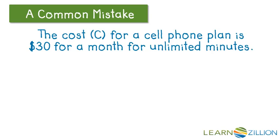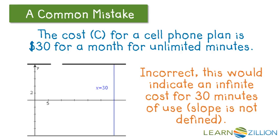A common mistake. So I wanted to point this out, so watch out for this one. The cost for a cell phone plan is $30 for a month for unlimited minutes. A common mistake is to think that it's a vertical line where x, the number of minutes, equals 30. So what this indicates, though, is an infinite cost because the value shoots off into infinity for one specific 30 minutes of use. So we're not locked into 30 minutes of use. Remember,